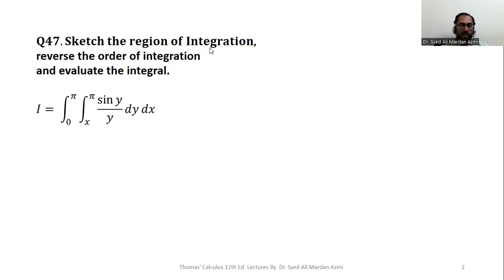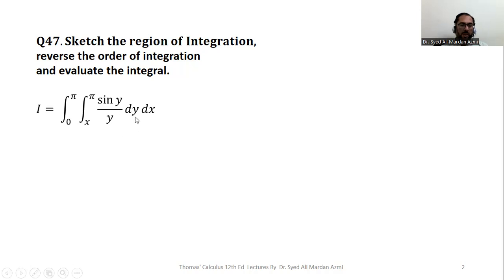In order to describe the region of integration we need some boundaries, and these boundaries can be derived with the help of limiting values of our inner and outer variables. In this question our inner variable is y and the limits of y are x to π. Our outer variable is x and the limits of x are 0 to π.